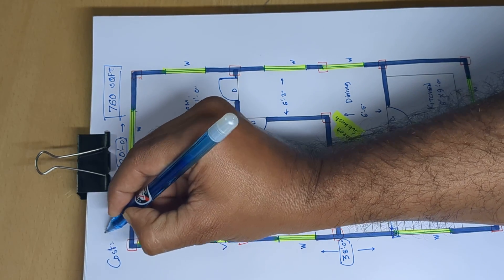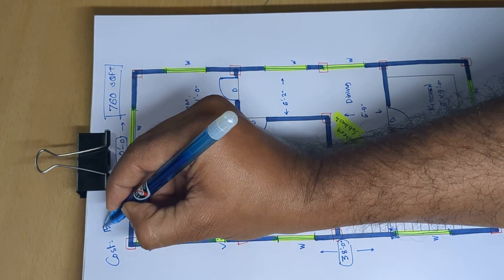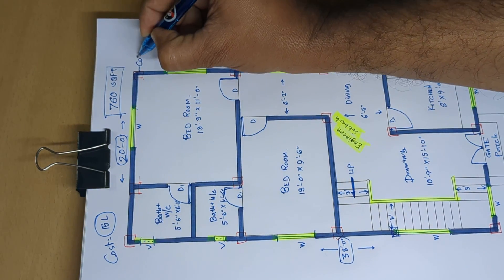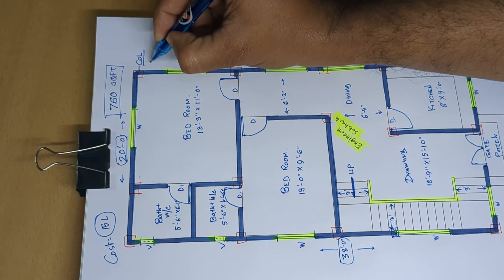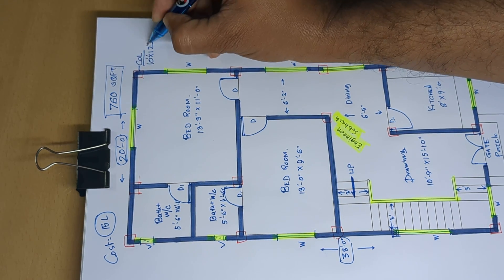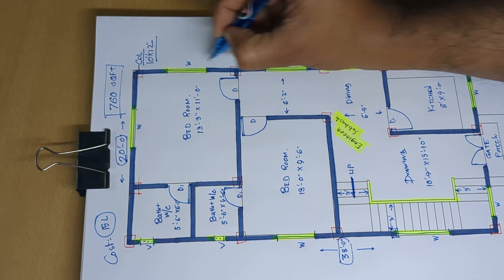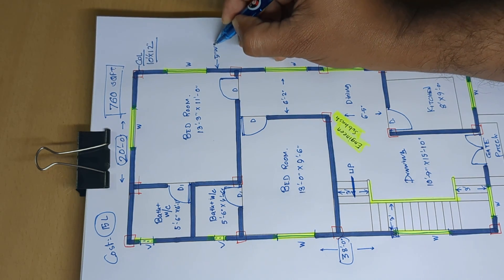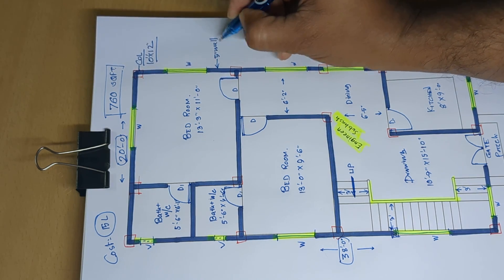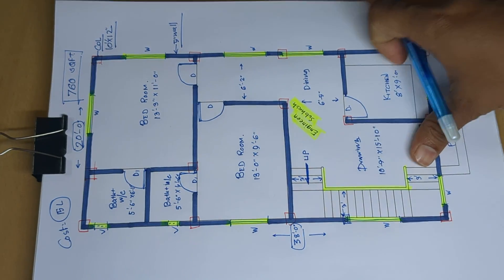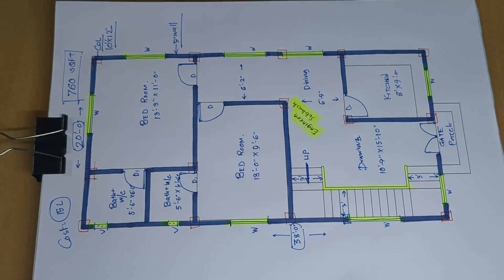Cost estimate: 15 lakh. Column 10 by 12 inch, wall 5 inch. If you like this design, please like and share.